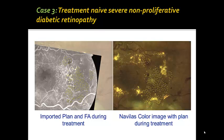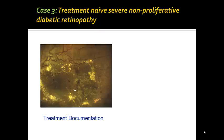Case 3: Treatment-naive severe non-proliferative diabetic retinopathy. This 36-year-old male patient with poorly controlled diabetes and hypertension presented with a visual acuity of 20/40 in both eyes. Retinal examination showed tortuous blood vessels, numerous hemorrhages and hard exudates outside the macula. Fluorescein angiogram showed a large area of non-perfusion in the posterior pole but no active neovascularization. Due to inability to come for close follow-ups, he chose laser TRP. After careful planning and integrating the treatment plan into the photocoagulator, the procedure was performed uneventfully. This patient remained stable at month 4.